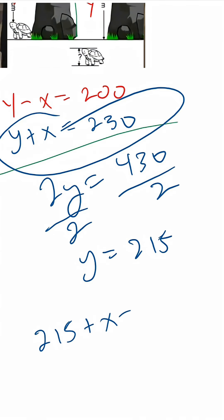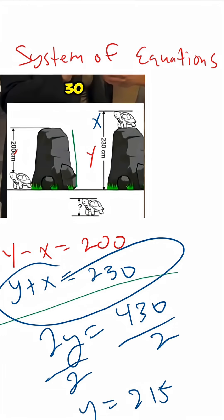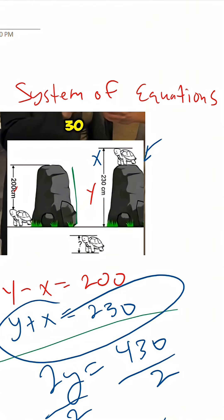So we have 215 plus X equals 230. Now all we have to do is solve for X by subtracting 215 on both sides. When we do that, 215 is canceled, and we're going to get X equals 15. So in other words, the height of this turtle right here is 15 centimeters. And that's it. That's all you got to do.